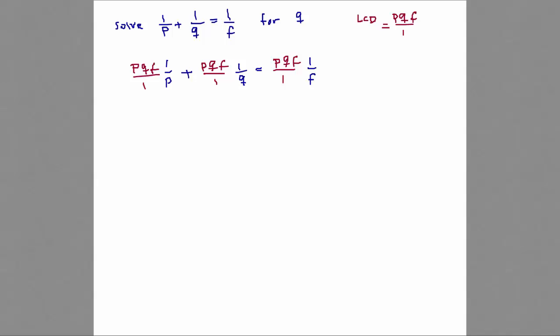Can somebody tell me what do I get in the first term then? What do I get here? What would be your first term? Just QF, right? QF. The second term would be just PF. Plus PF equals PQ.